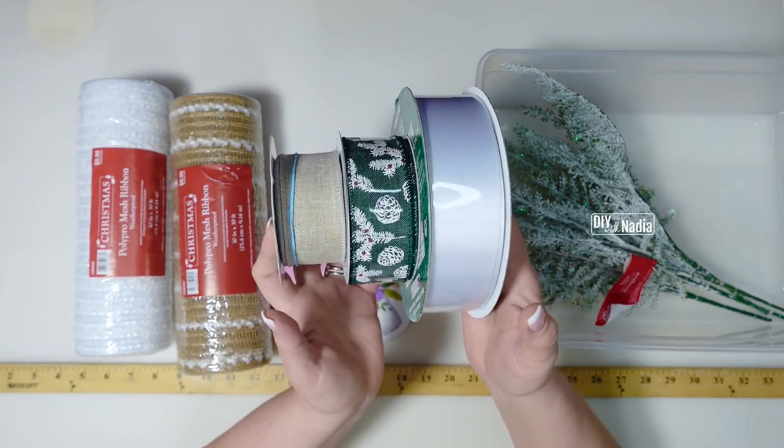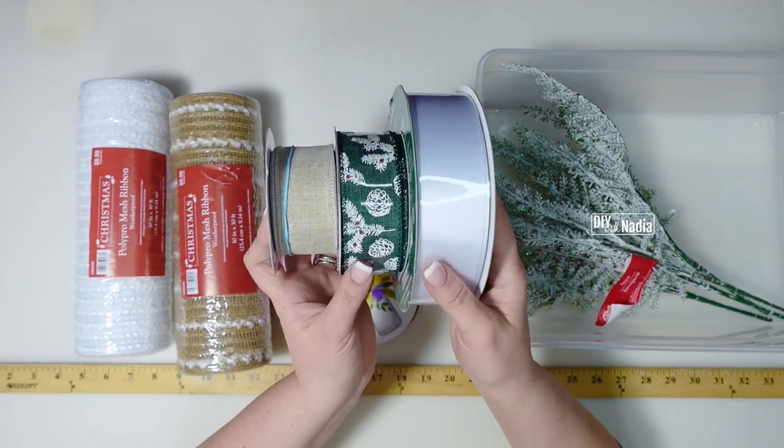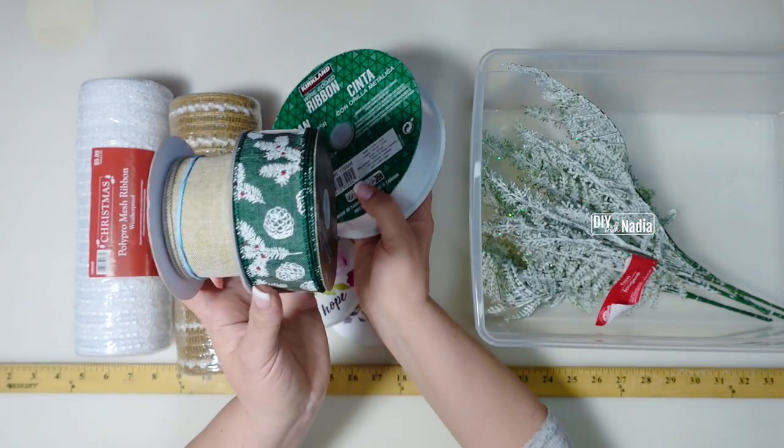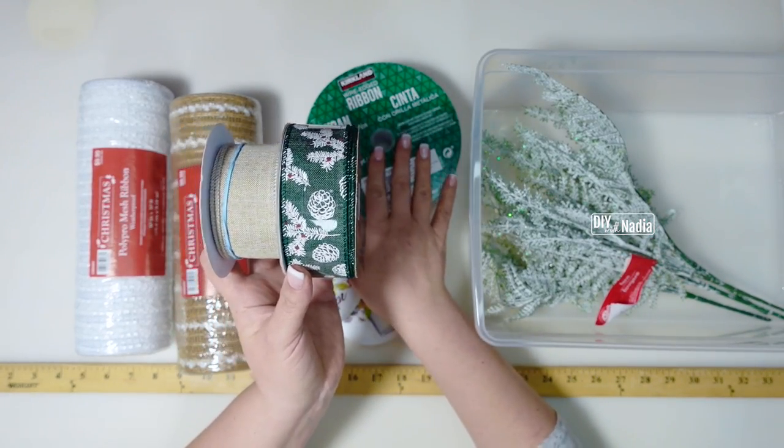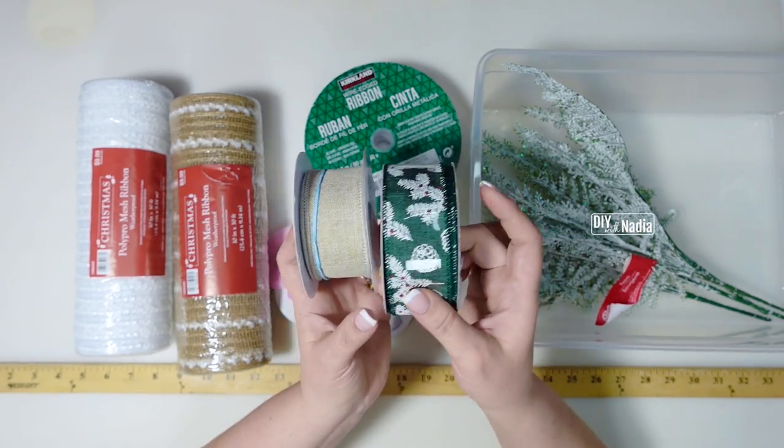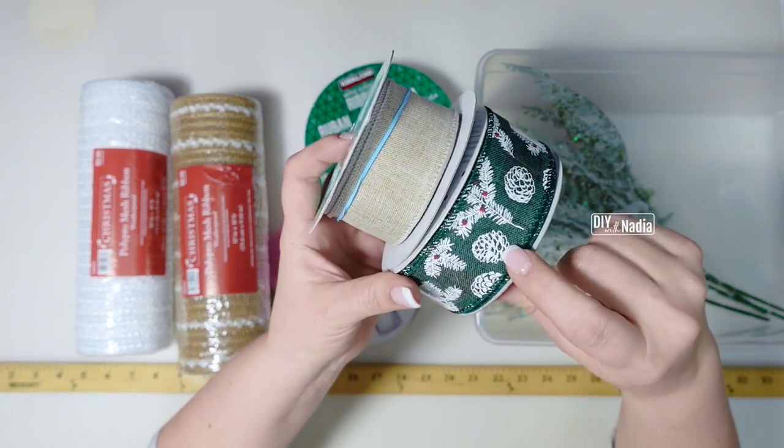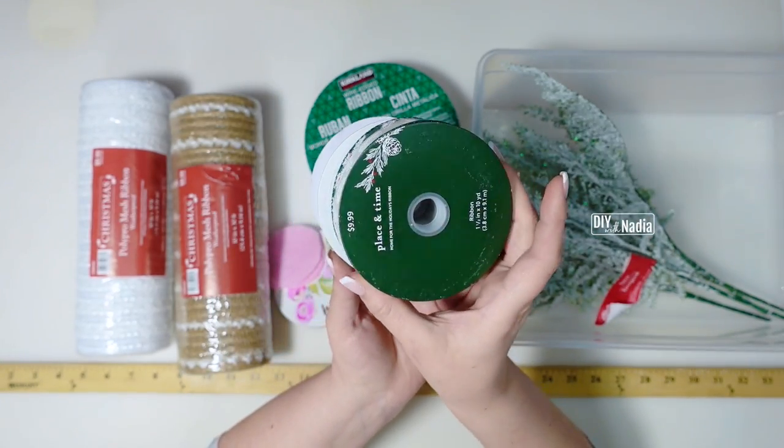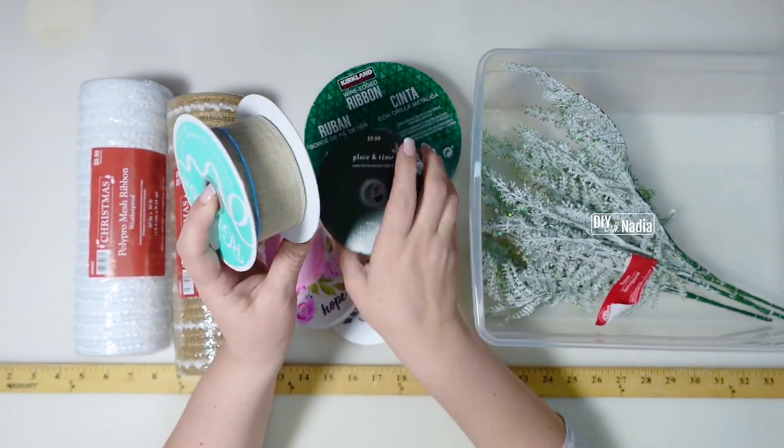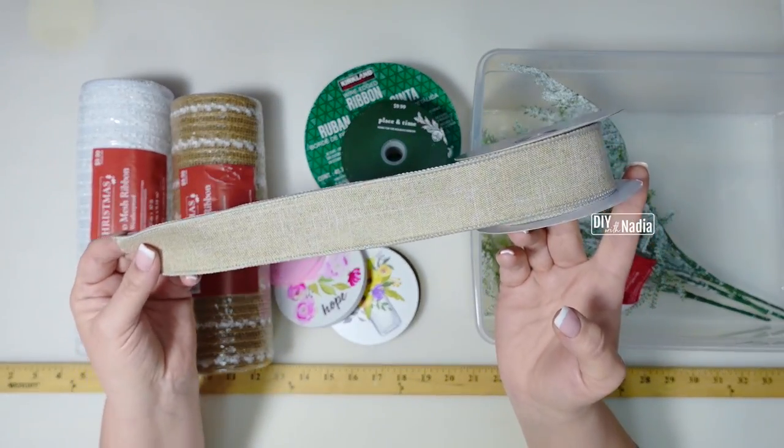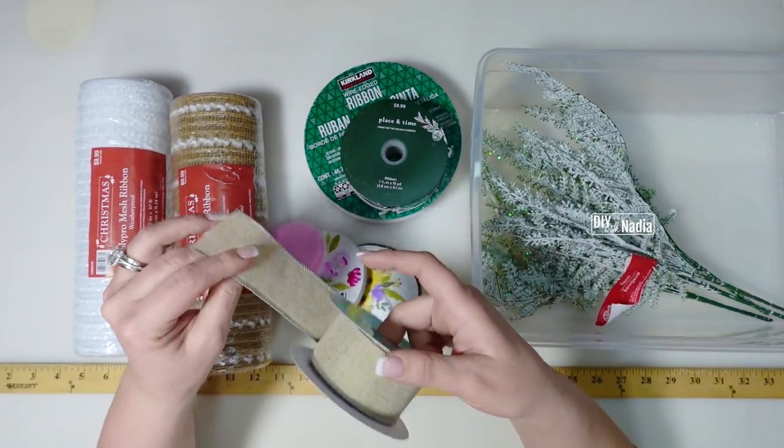Here is the ribbon I'm going to use. They're all one and a half inch. The white one is from Costco. I get this whenever I can find it. Then this beautiful green one is from Joann's and it has little pine cones. Really, really pretty. And this one is 10 yards. And this light burlap ribbon, I got this one from Craft Outlet.